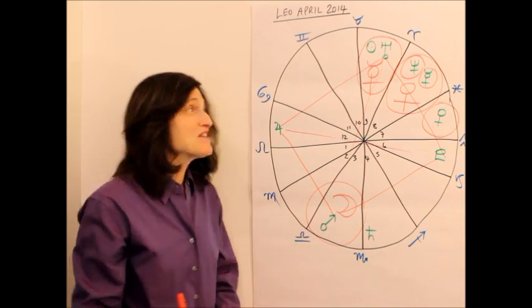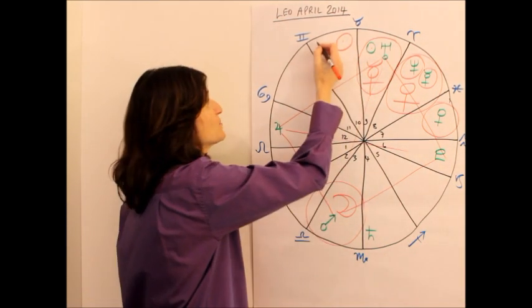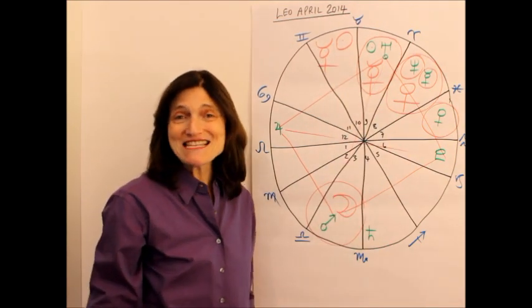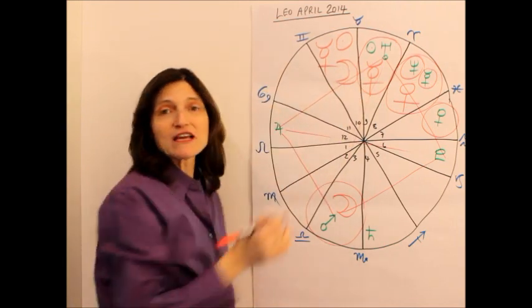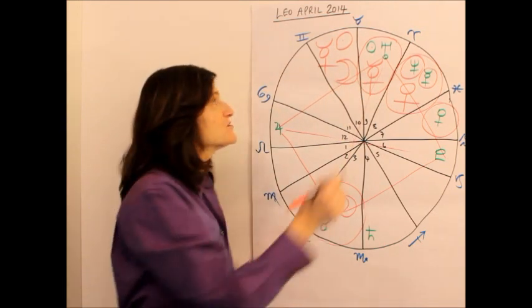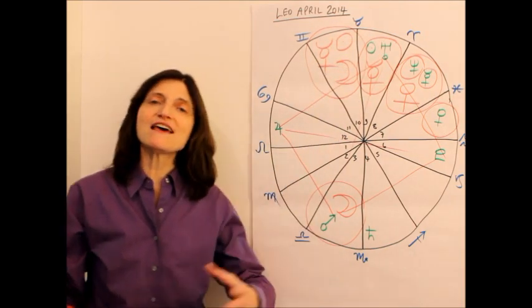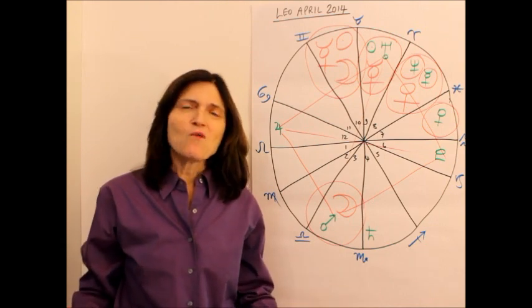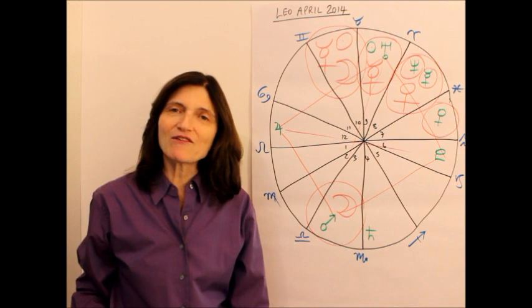Then on April the 21st we have the Sun going into your 10th house. On the 24th Mercury joins it, and on the 29th of the month we have got a new moon solar eclipse in Taurus. So as you can see, towards the end of the month we've got a big focus on your 10th house, Leos. This is a big focus on your work area. What new beginnings, new moon, do you need to make in the work area?